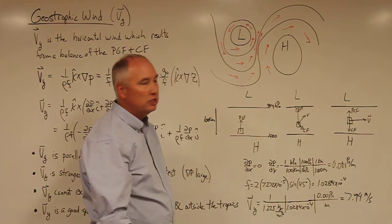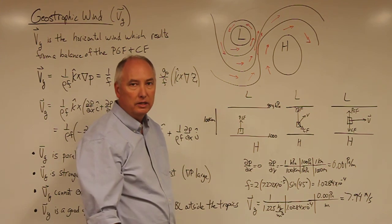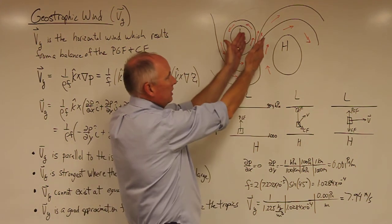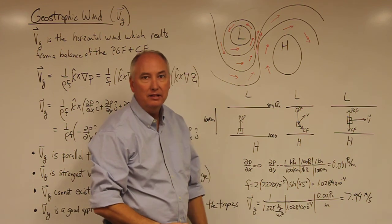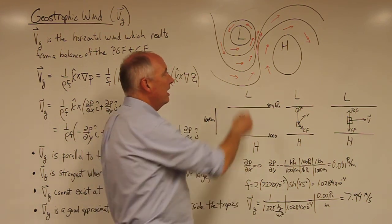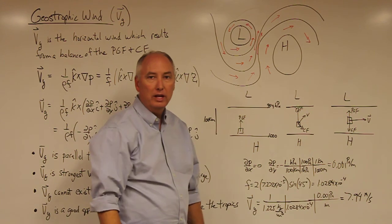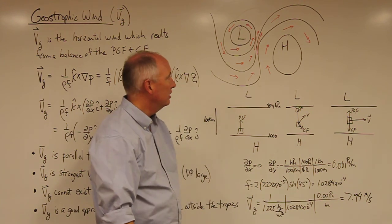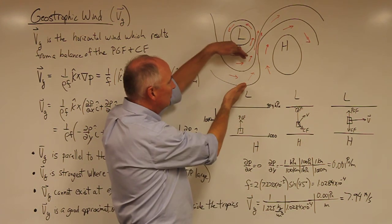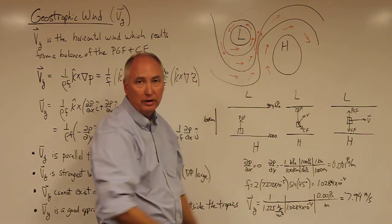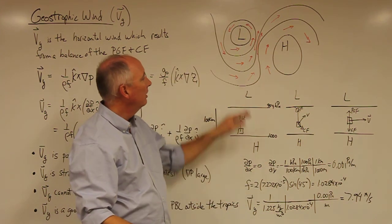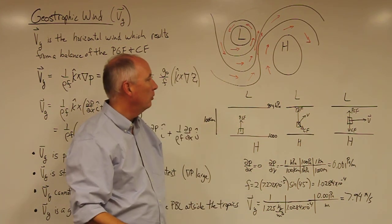The strength of the geostrophic wind is controlled by the pressure gradient. Where the isobars are packed tightly, the pressure gradient is strongest and the geostrophic wind is strongest. Where isobars are far apart, the gradient is weakest and the geostrophic wind will be weakest.